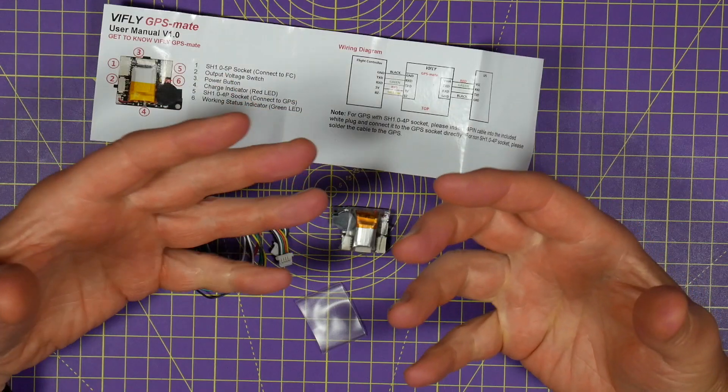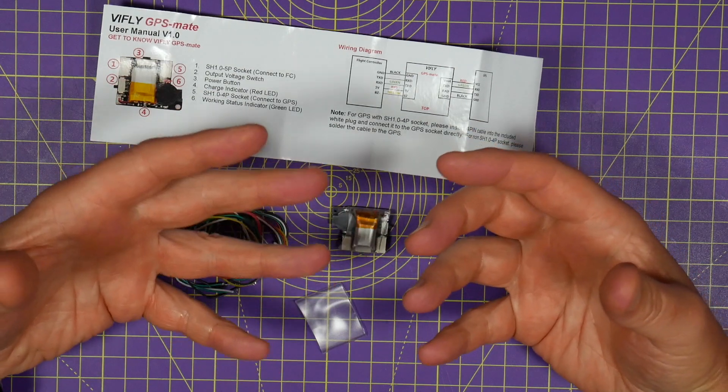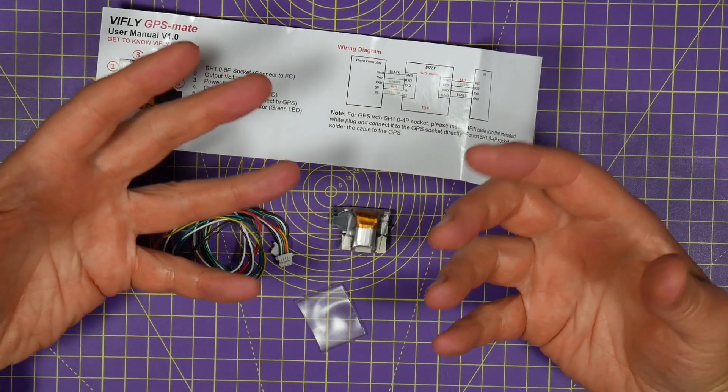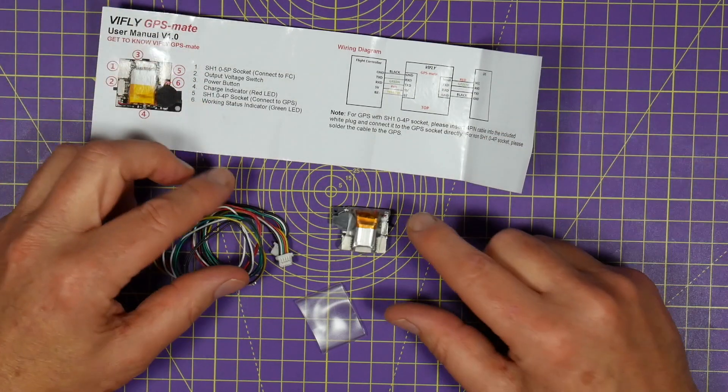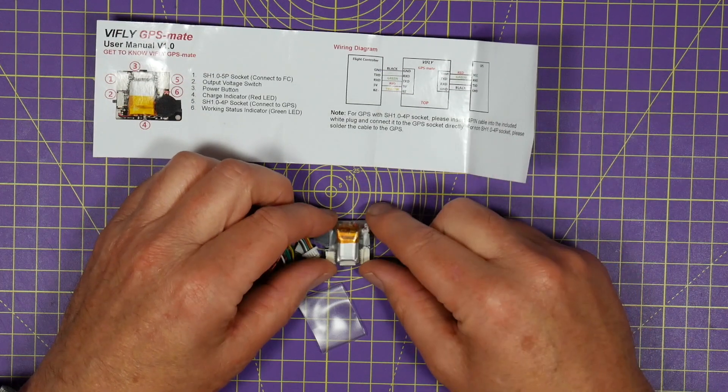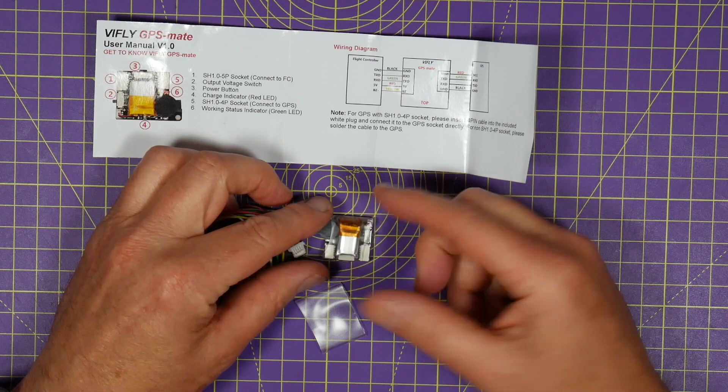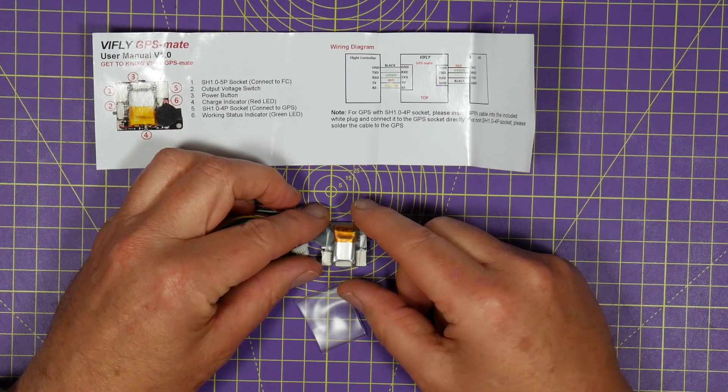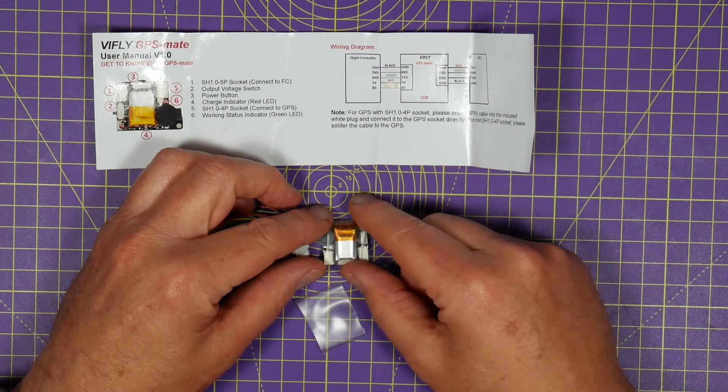When you first power up the GPS module it needs to get a fix and this takes time. It's got to search for satellites by scanning and until it's found enough for a good fix you can't take off. And overriding this isn't exactly a sensible thing to do. This GPS so-called cold start can take a few minutes but in some locations it takes ages, so 10 minutes is not unusual.